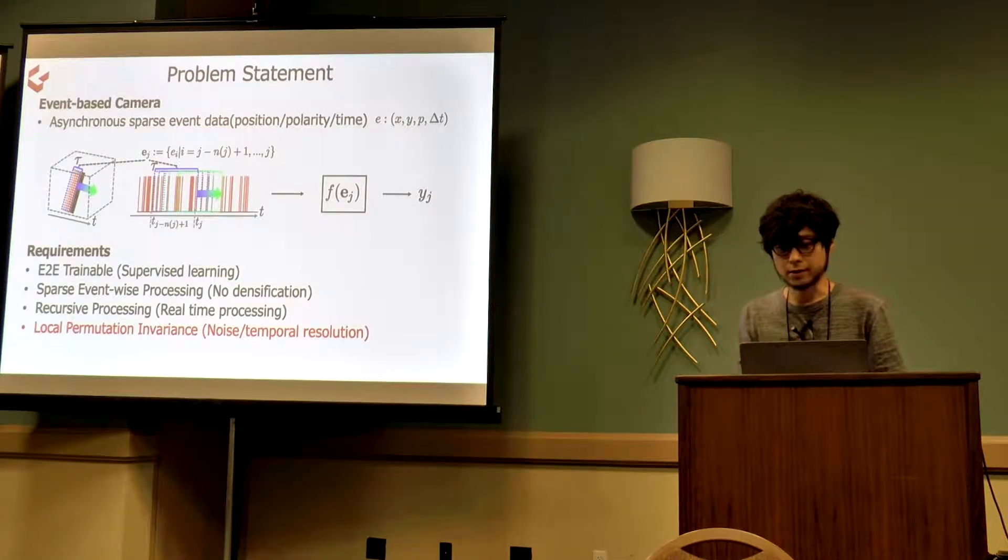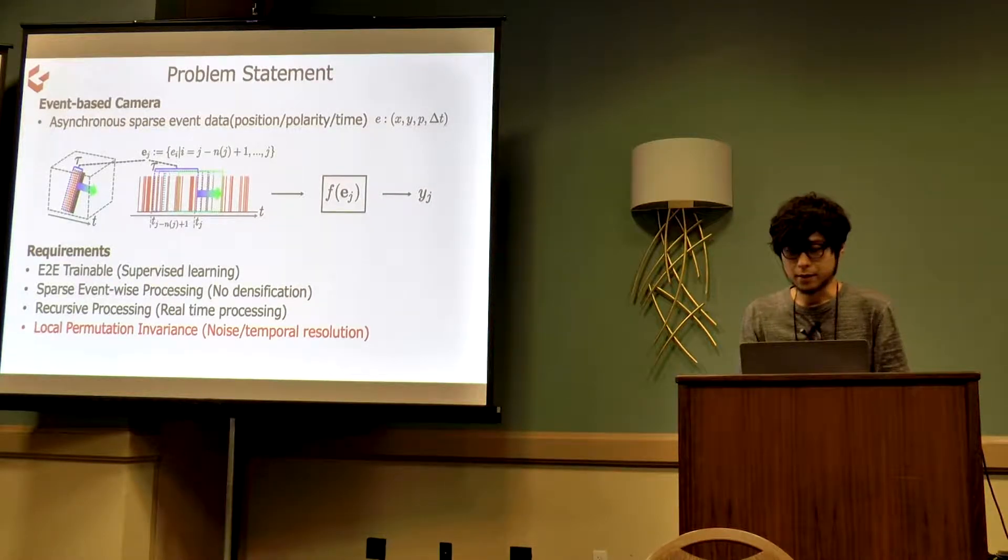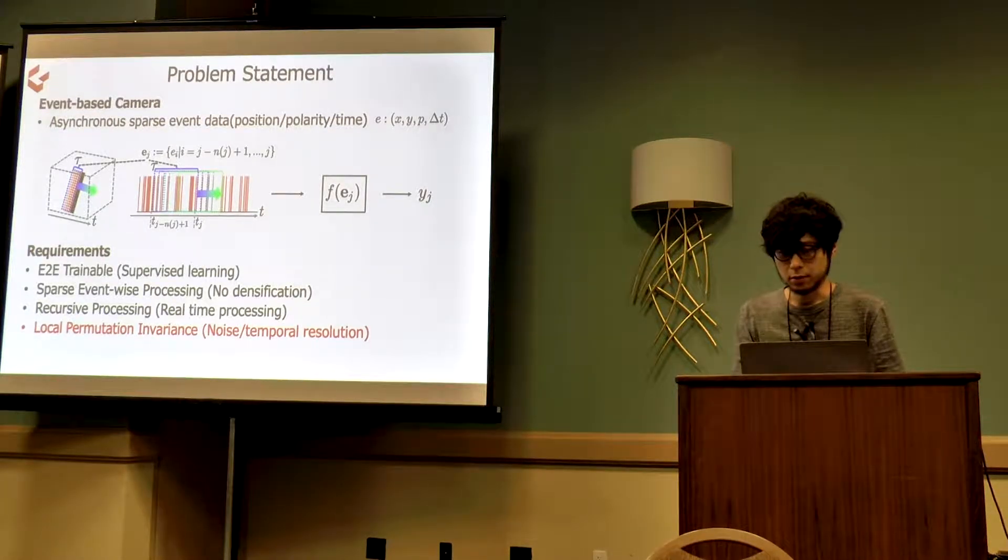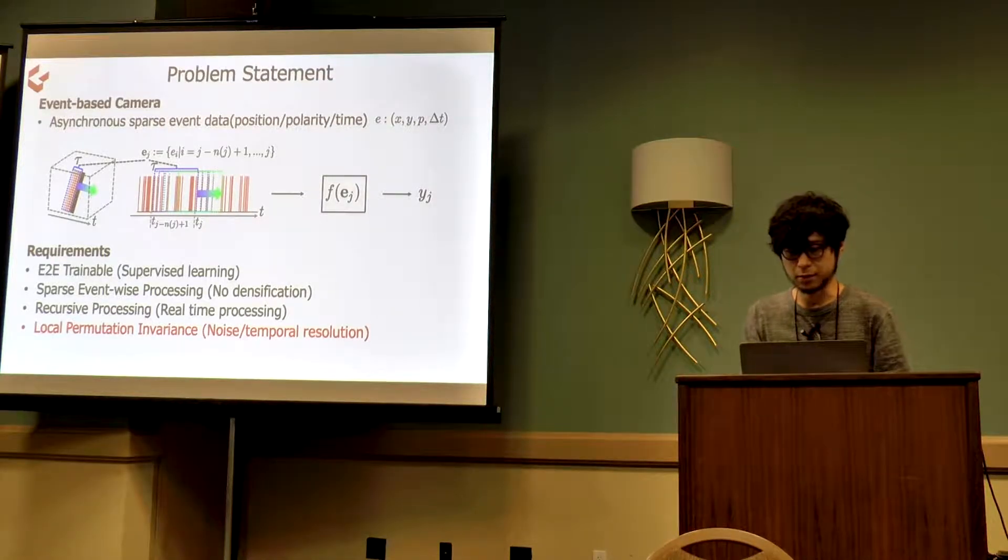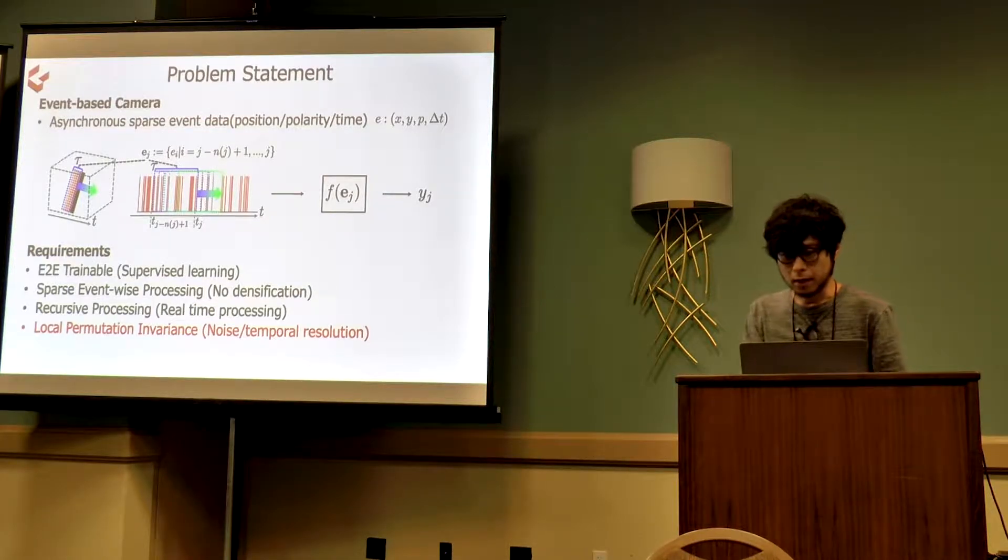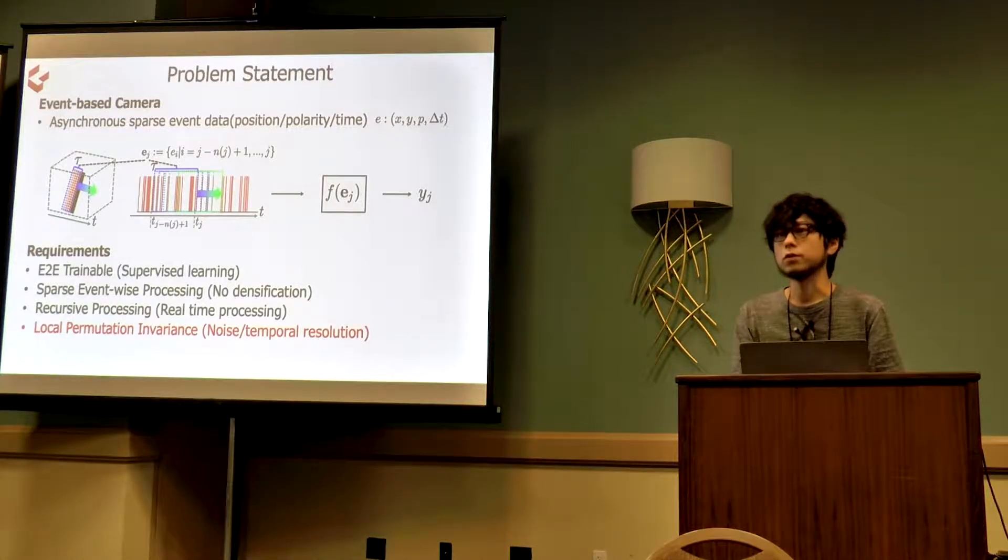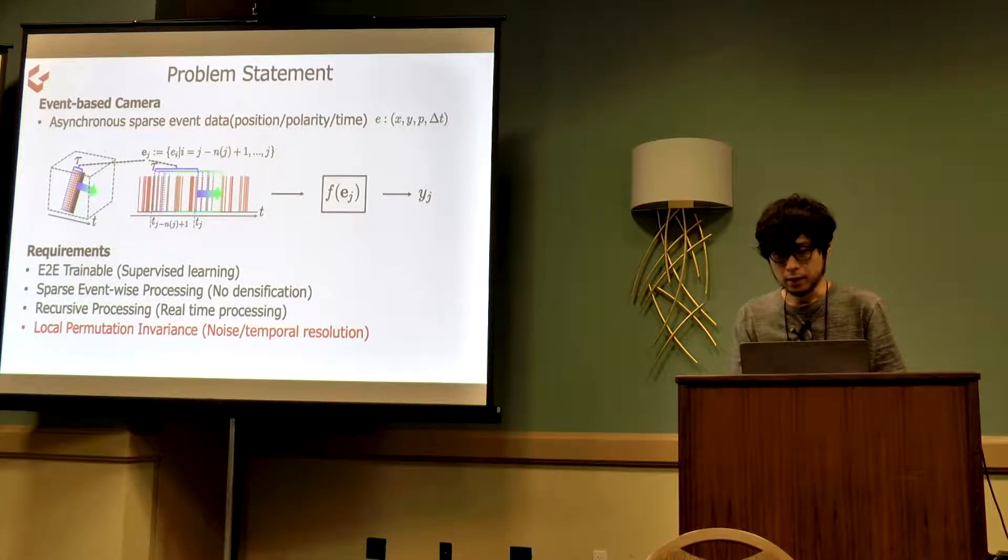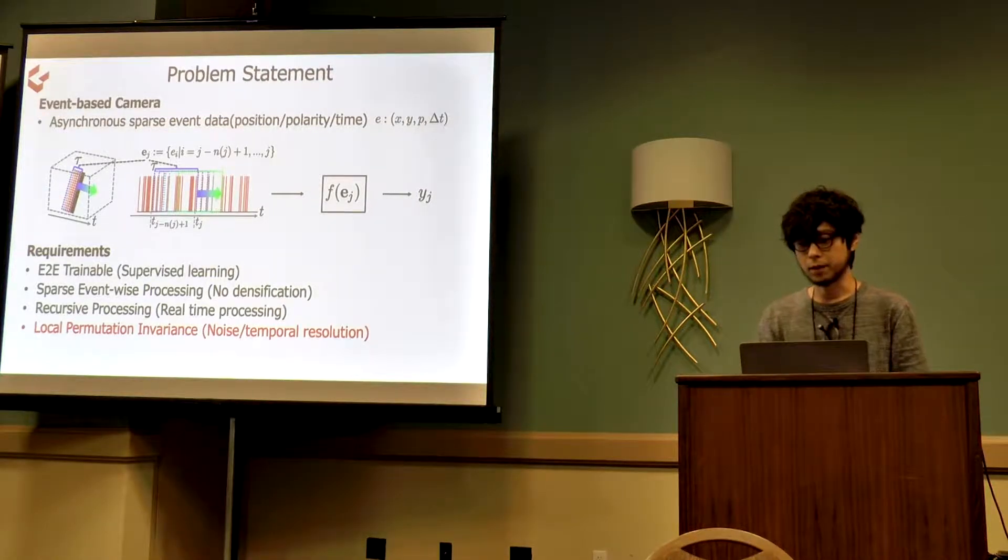Let me first formalize the problems we consider. Our goal is to realize an end-to-end trainable neural network F, which models the relations between set of events EJ and target value YJ. We consider processing a set of events within a fixed time interval tau. Events come at non-uniform rate, meaning the network needs to process variable rate, variable length data. Ideally, it will process incoming data in event-wise manner immediately as it receives new events.